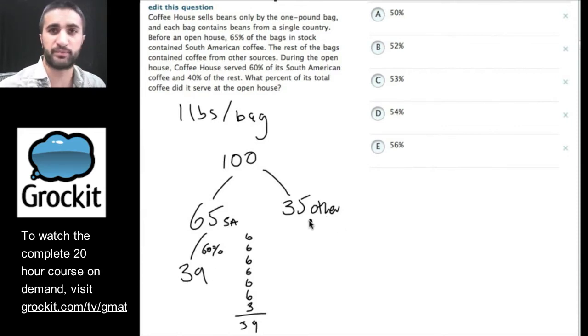And then it says 40% of the rest. 40% of the rest. So, what's 40% of 35? Well, 4, 4, 4. And then 40% of 5 is 2. So, that should give us 14.